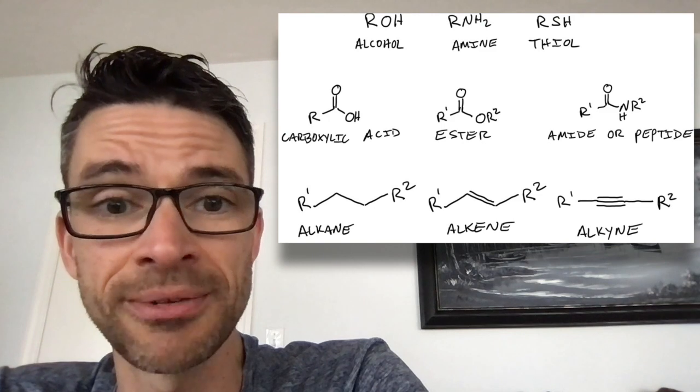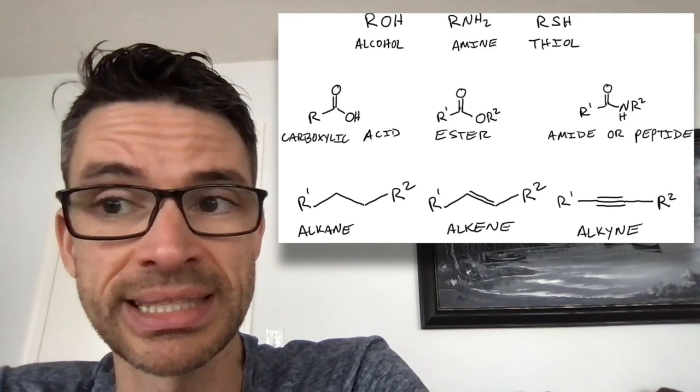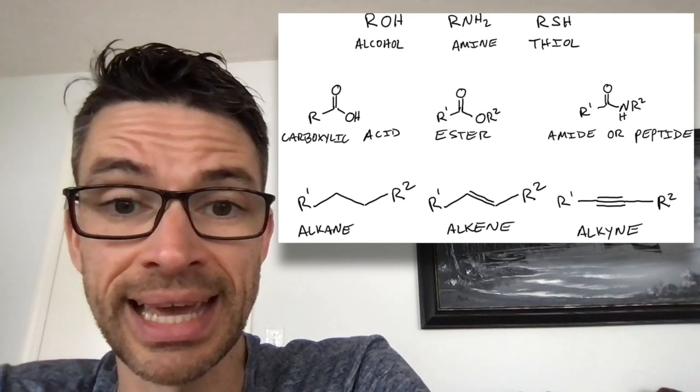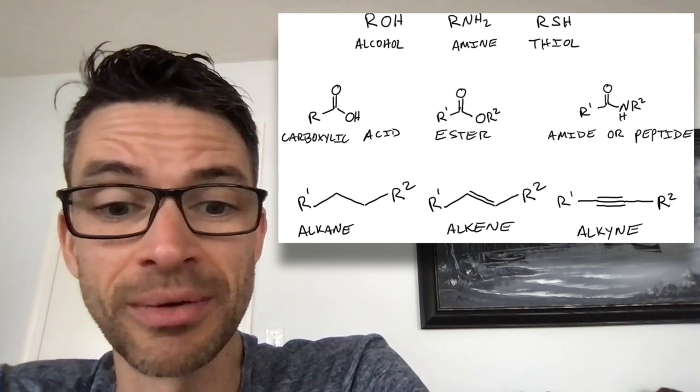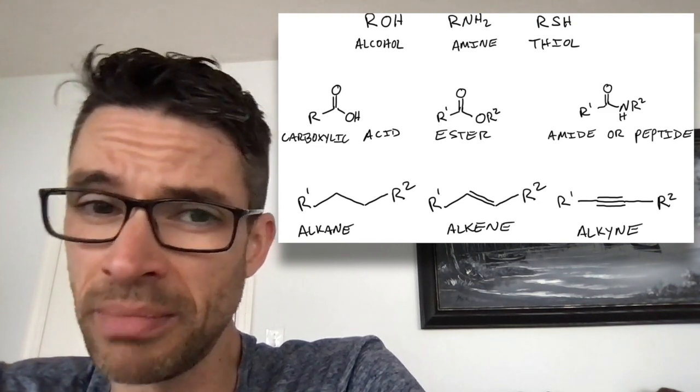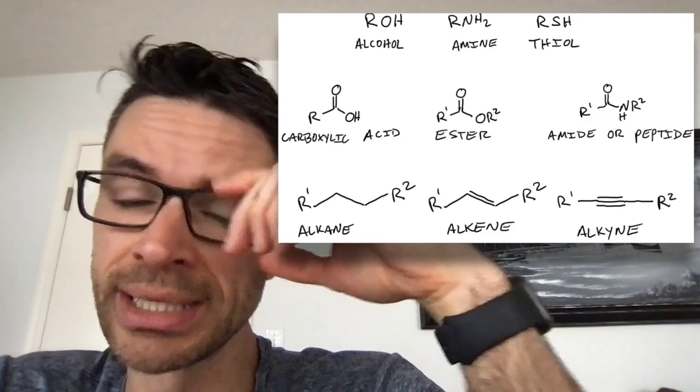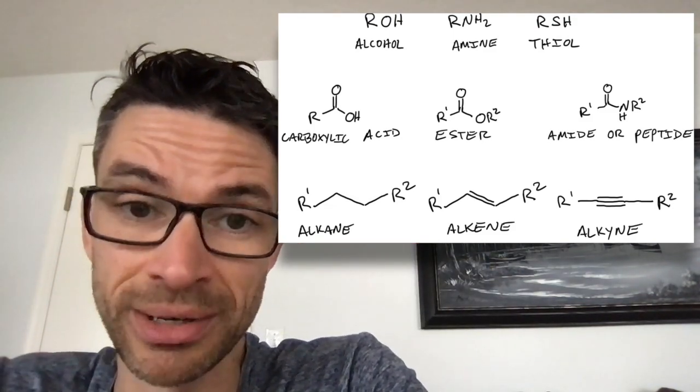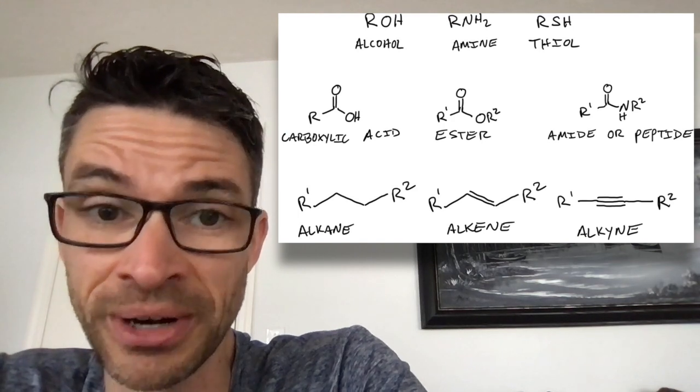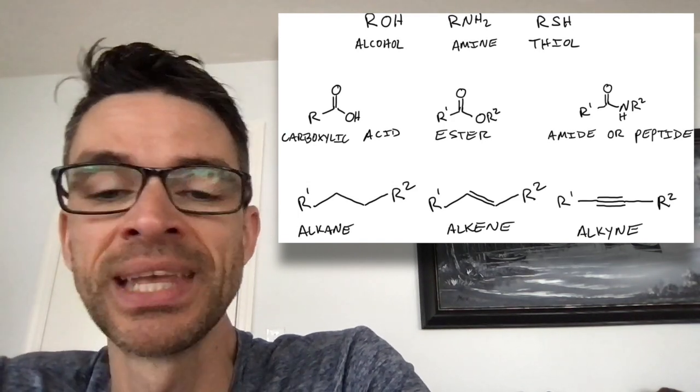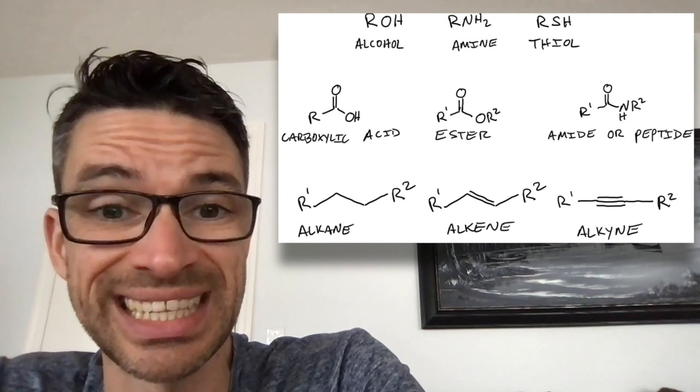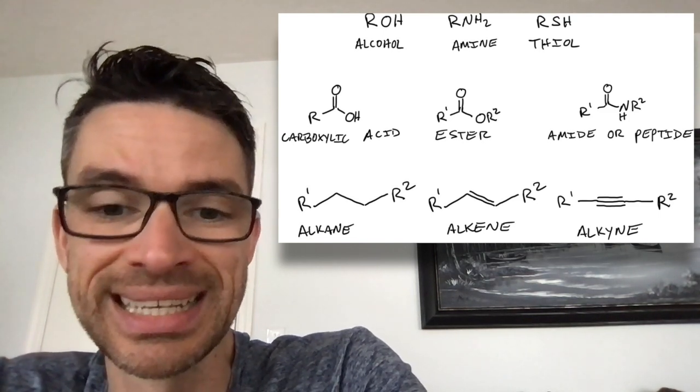Finally, we have functional groups that are based on carbon atoms bonded to other carbon atoms and that could be an alkane, which is a C single bond C. Now, there aren't that many reaction conditions that can actually break these C double bond or C single bond C bonds, but there are a few and they're very, very, very industrially important. Then we have an alkene, which is a C double bond C. Then we have an alkyne, which is a C triple bond C.